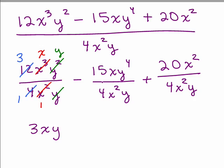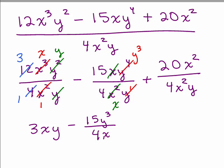On to the next part: there are no common factors between 15 and 4, so we're not reducing that. For x over x squared, there are more x's in the bottom, so after canceling I'm left with just 1x in the denominator. And with y to the fourth over y, subtracting exponents gives you y cubed in the numerator. So this leaves me with 15y cubed over 4x. For the third term, 20 over 4 reduces completely, x squared over x squared reduces completely, so I have just 5 in the numerator and a y in the denominator.